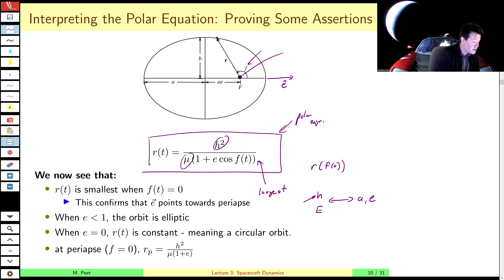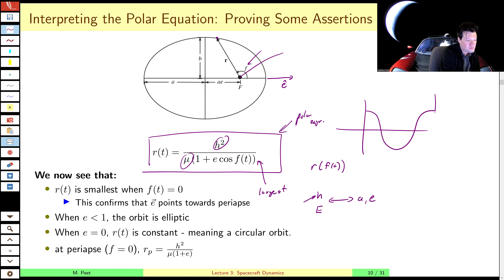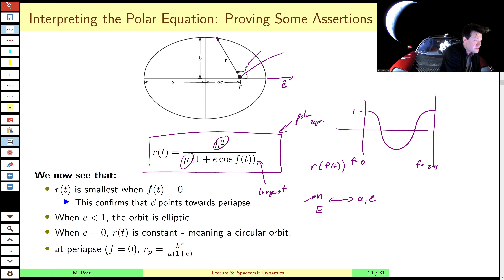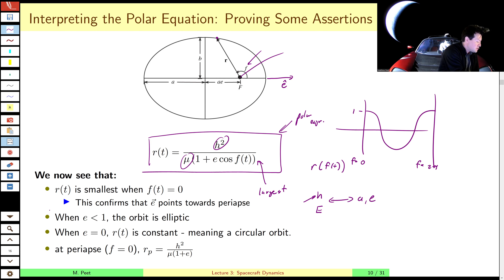To get the smallest value of r, you look for the largest value of the denominator. The denominator is 1 plus e·cos(f). Since e is positive and cosine of f varies between zero and two pi, the largest value of cosine f is just one, occurring when f equals zero. So the denominator is largest when f is zero, which means r is smallest when f is zero. This verifies our assertion that the eccentricity vector points towards the periapse — the closest point on the orbit.